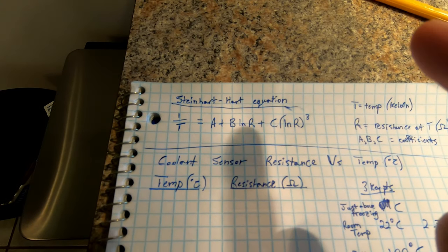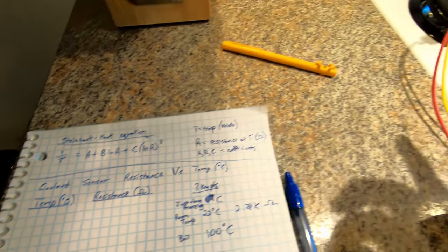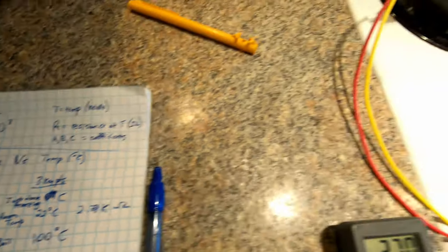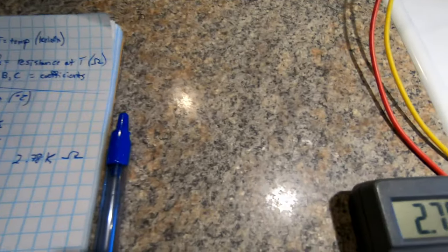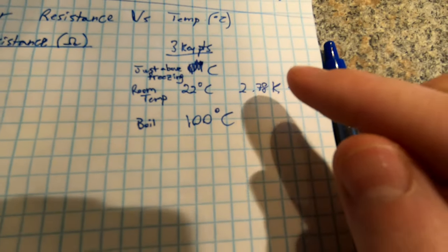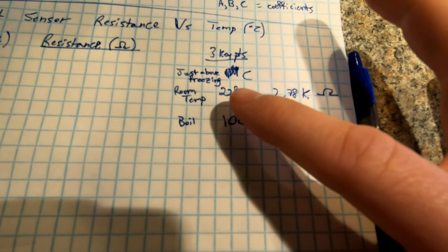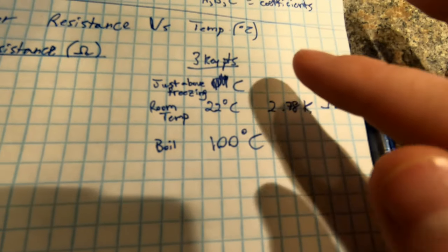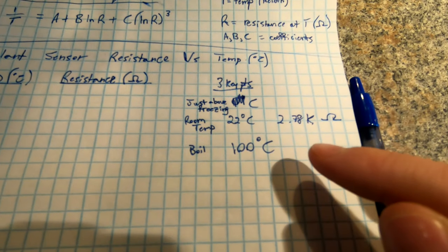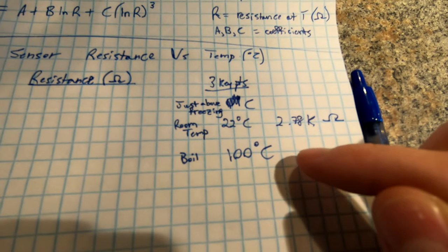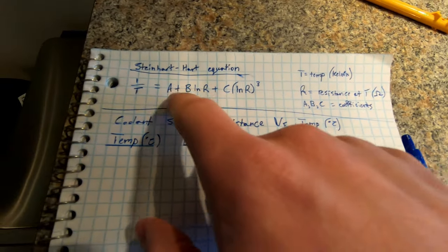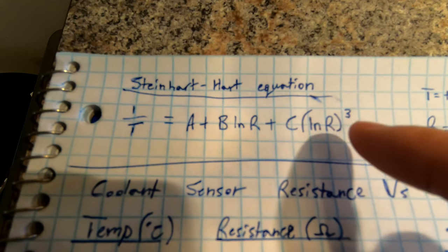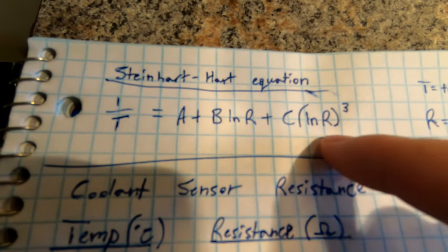To use the Steinhart-Hart equation you need to find three constants: a, b, and c. To get those constants you need some reference points from your thermistor. I'm going to use three key points. At room temperature — 22 degrees off this thermometer — I've measured the resistance with my multimeter. Then I'll put some water in the freezer, get that temperature and resistance reading, and also get the resistance reading at boiling point.